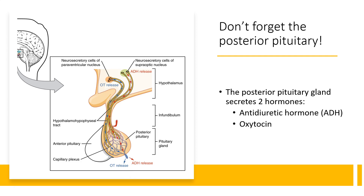We also have a posterior pituitary that works quite differently from the anterior pituitary. The posterior pituitary receives hormones from the hypothalamus. This includes antidiuretic hormone, important in blood pressure regulation, which is made in the supraoptic nucleus, and oxytocin, which comes from the paraventricular nucleus.